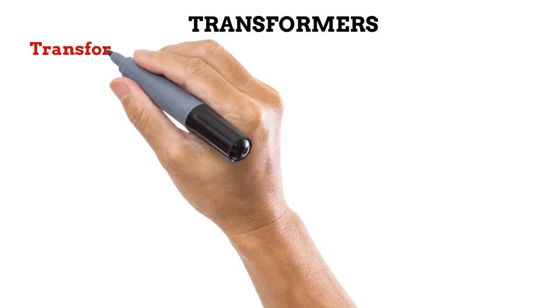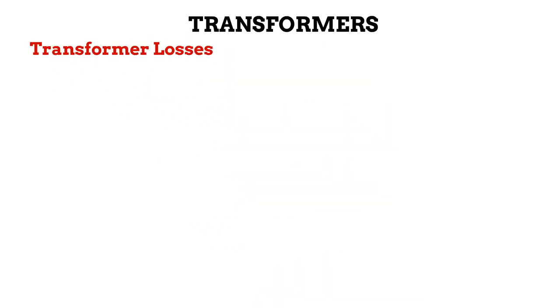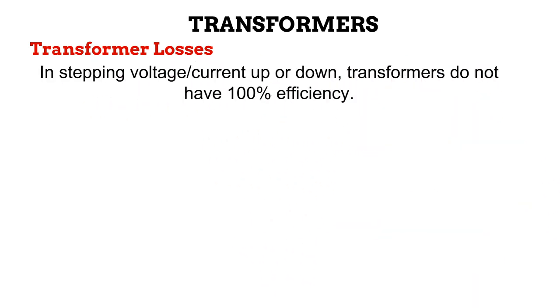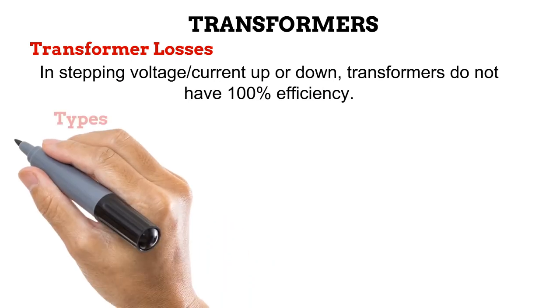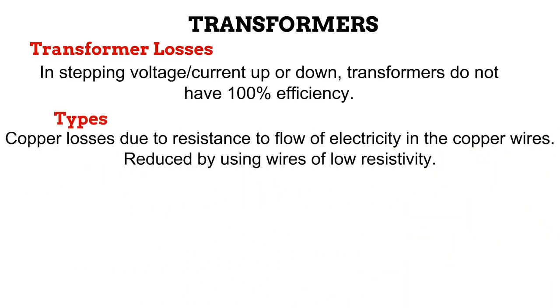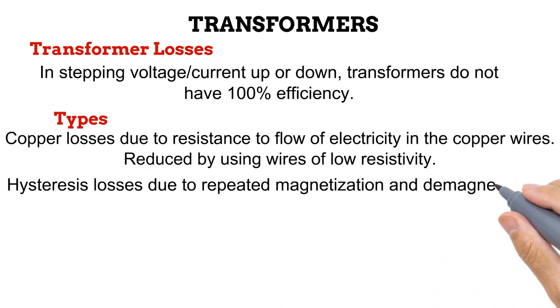We must take note that the process of stepping current and voltages up or down in a transformer is not 100% efficient. Something called transformer losses is always encountered. The types of transformer losses include copper losses which occur due to resistance in the flow of electricity in the copper wires of the coil. When wires that have low resistivity are used, less copper losses occur.